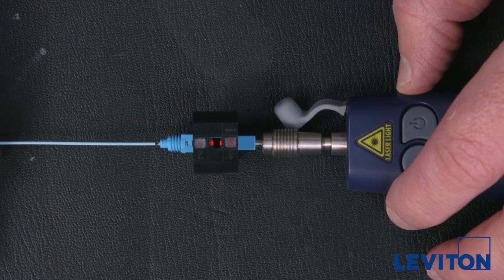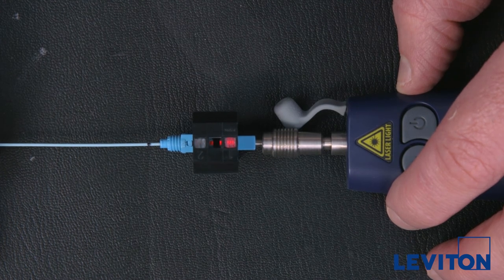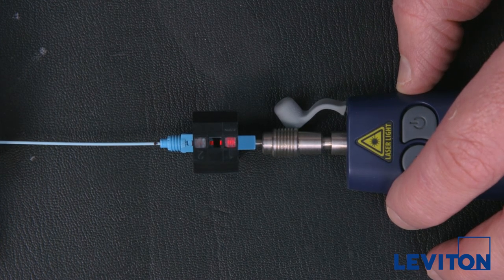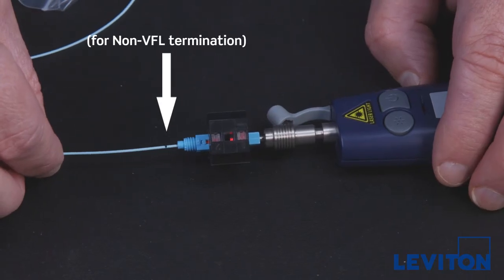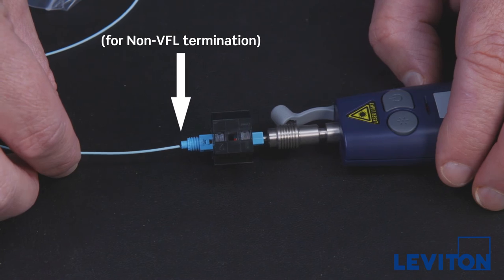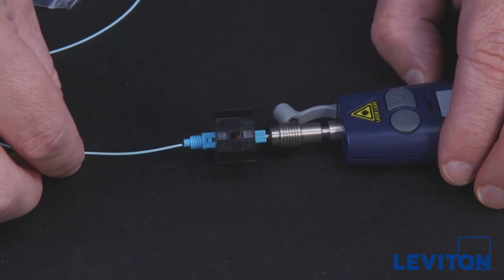Once the fiber is inserted, the light emitting from the visual fault locator in window one should dim or disappear, indicating that the fiber has mated with the connector. If you are not using a visual fault locator, the mark on your fiber should be in line with the end of the connector.